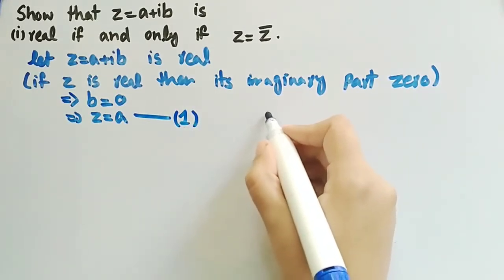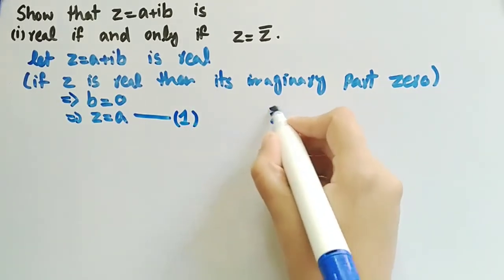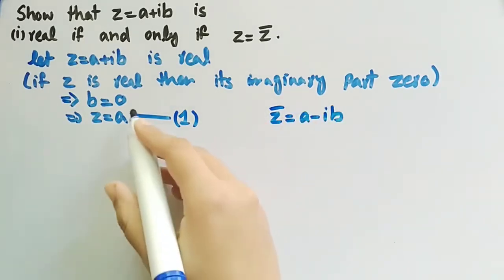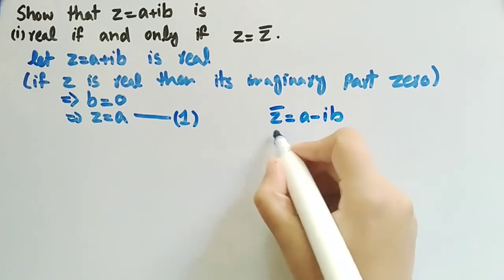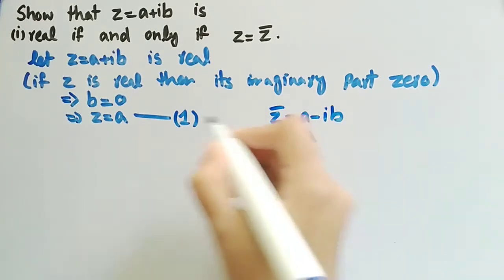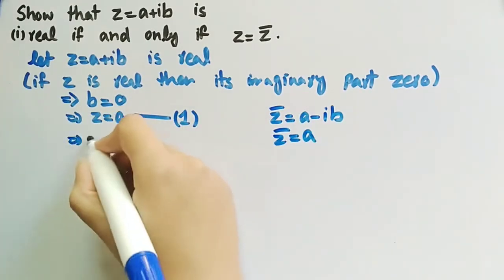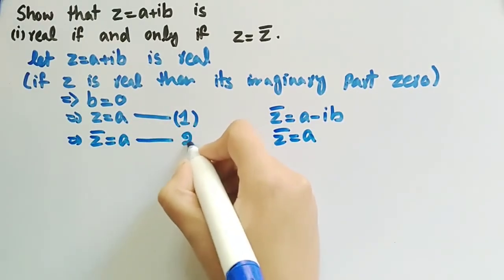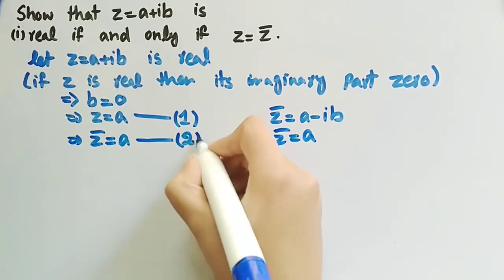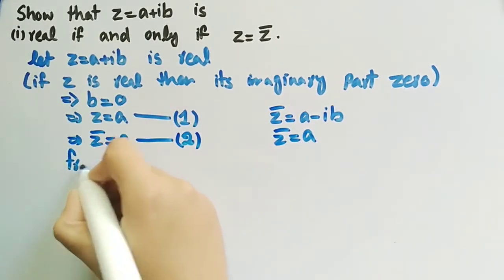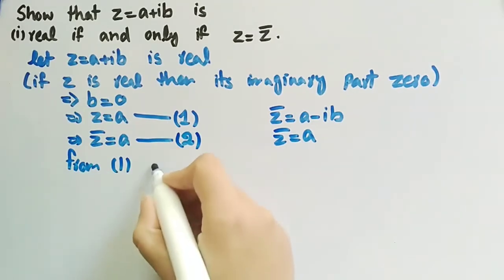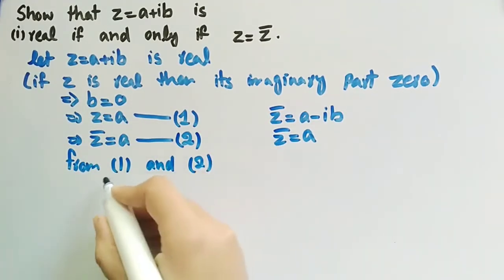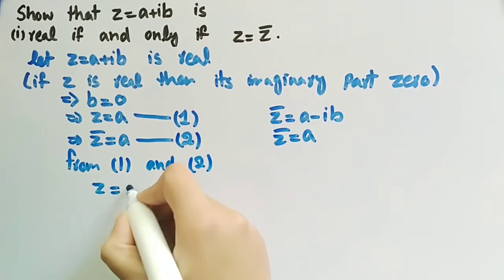The conjugate of the complex number Z is A minus iB. When B equals 0, Z conjugate will also equal A. So we write Z conjugate equals A — let this be equation number 2. From equations 1 and 2, we can write Z is equal to Z conjugate.